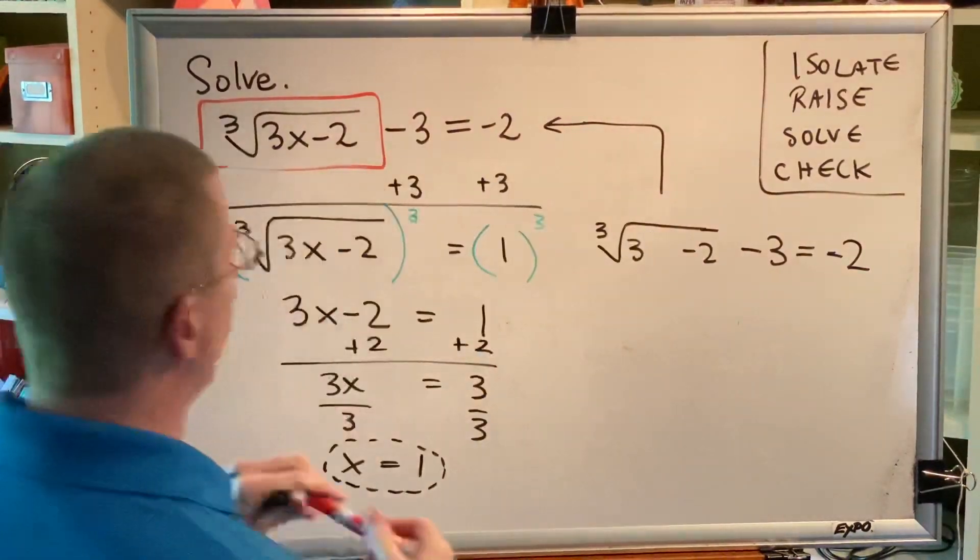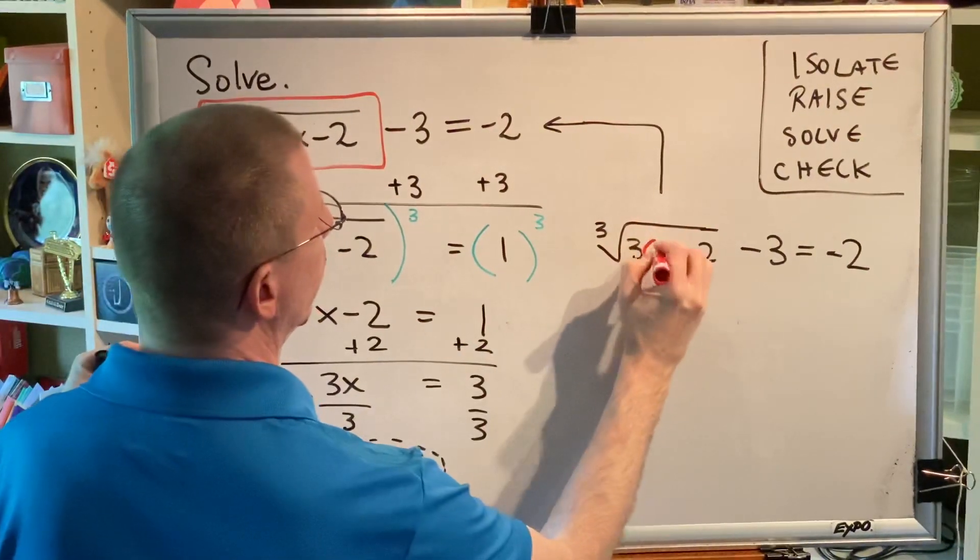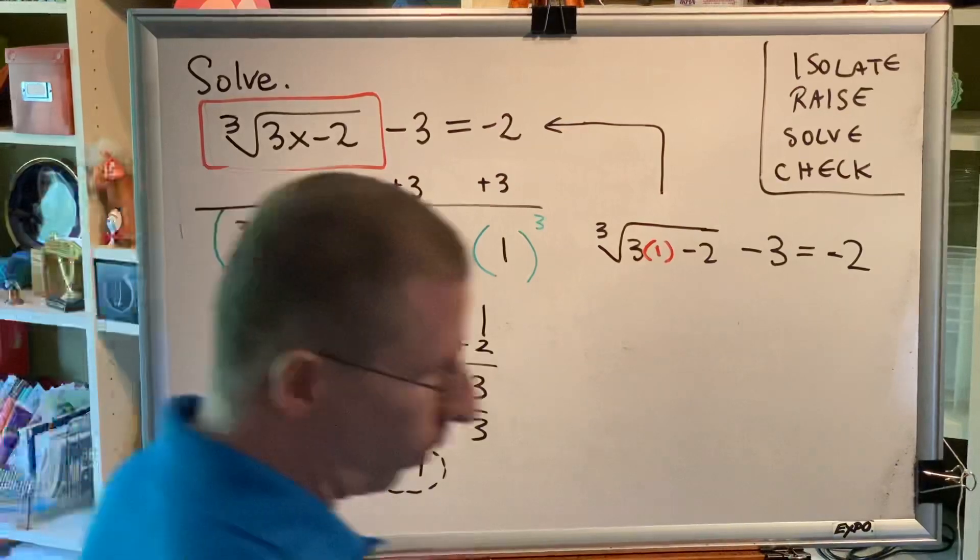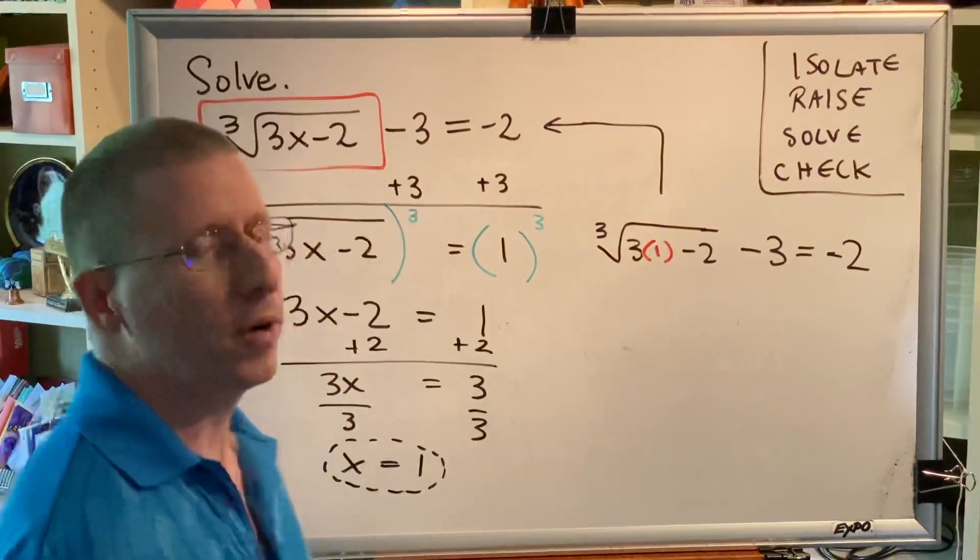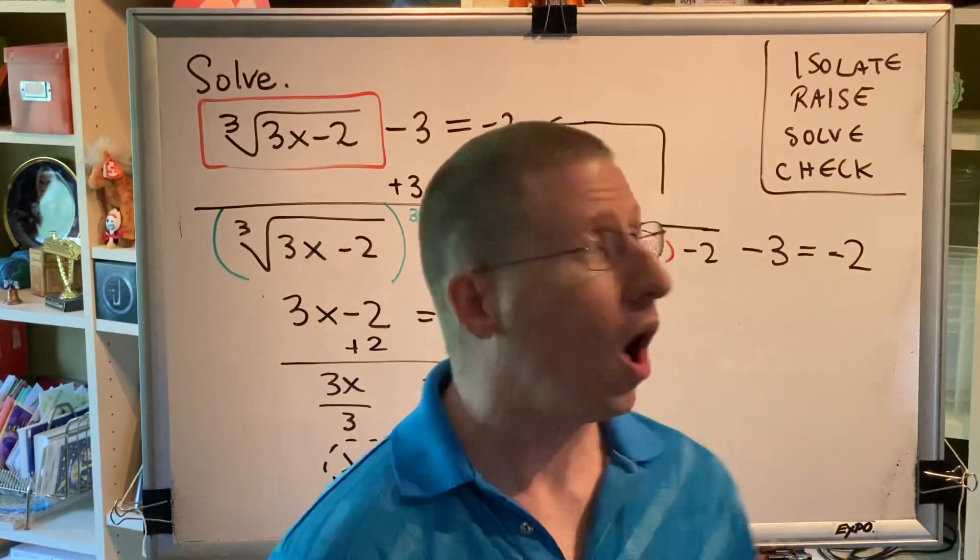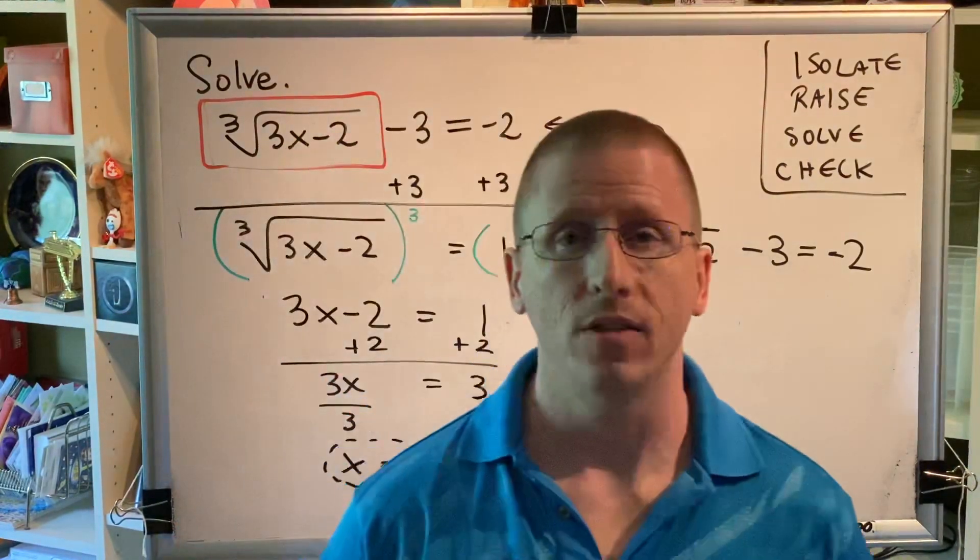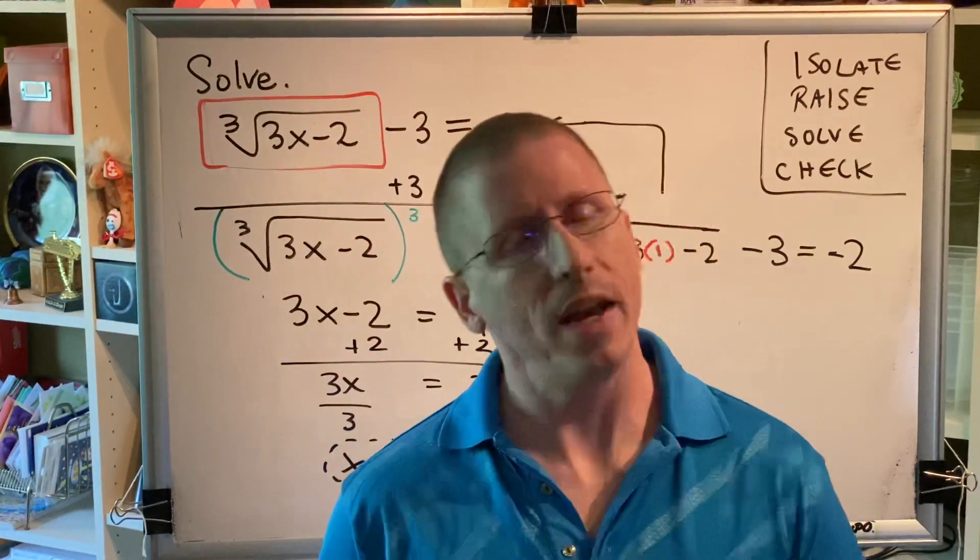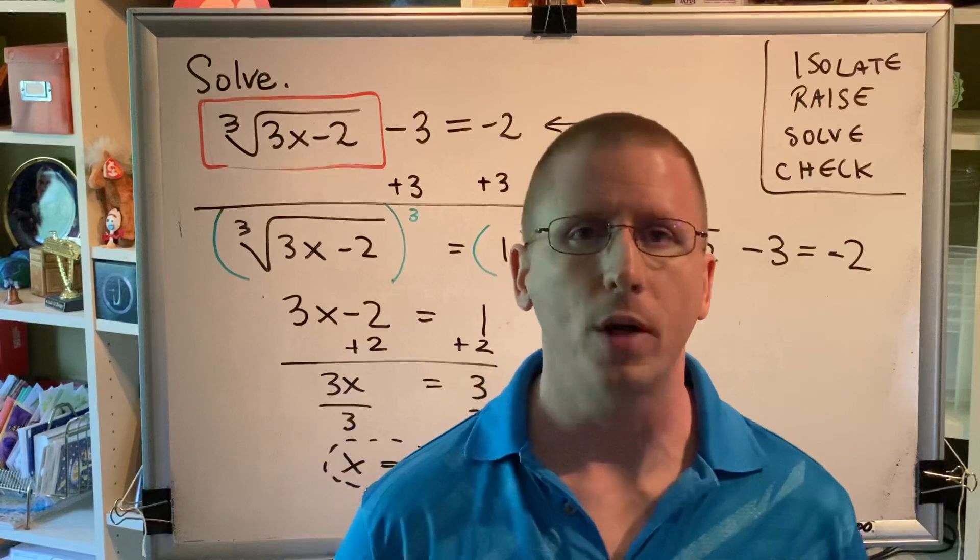Everywhere we see an x, we put 1. And now we begin to simplify. We will not use any properties of equality when checking our work. For example, we will not add 3 to both sides. We simply evaluate what number is on the left side by following order of operations.